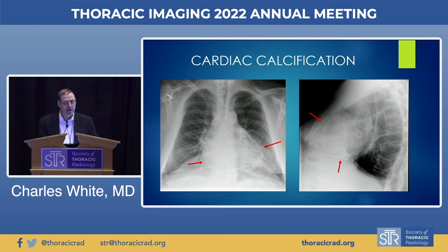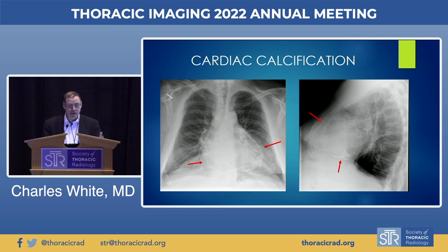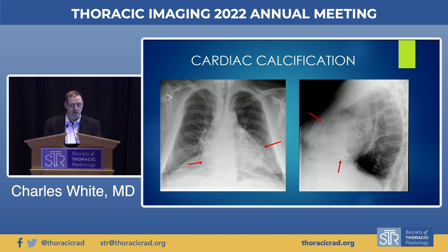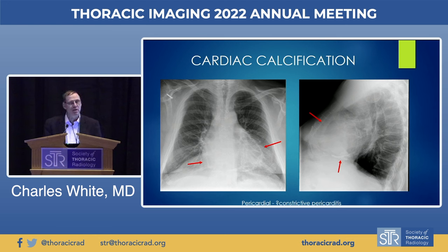If the calcification extends to the right side of the heart, perhaps in addition to the left side and anteriorly as well, then you might think of pericardial calcification, which often favors the AV grooves, the right side of the heart, and perhaps the left side. That's a good way of distinguishing myocardial from pericardial calcification. Clinically, when one sees pericardial calcification, one should give some thought to the possibility that the patient has constrictive pericarditis.